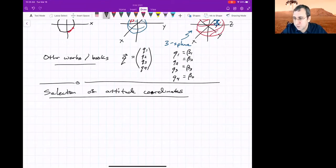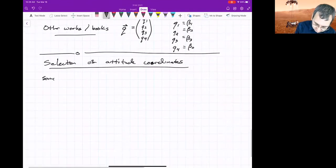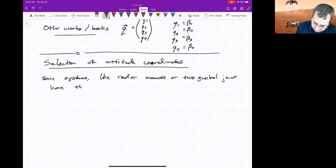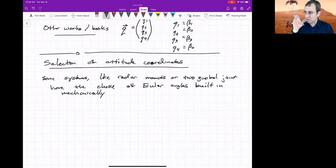Some systems, not necessarily spacecraft systems, but some systems have sort of built in through the mechanical design what the attitude parameters should be. Like radar mounts or two gimbal joints. They have the choice of Euler angles sort of baked in mechanically by how things are turned, which means you don't really have a choice.